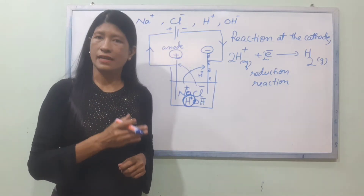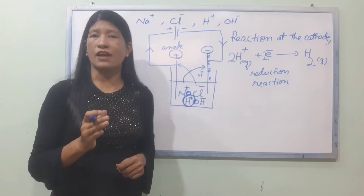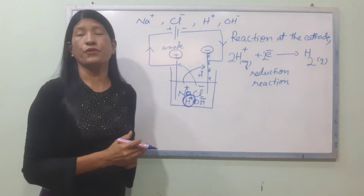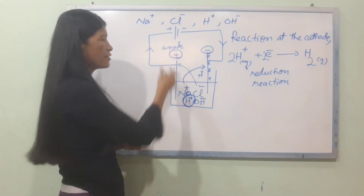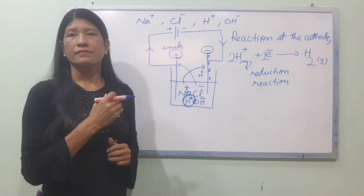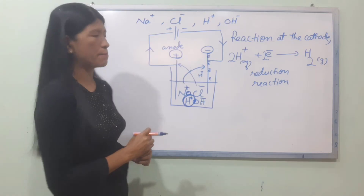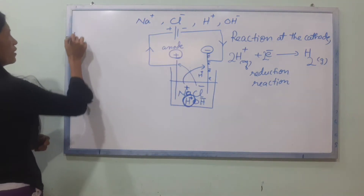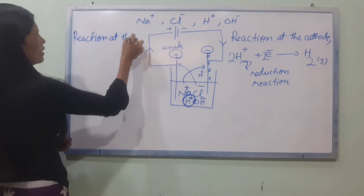The reaction involves OH- ions. The OH- ion loses an electron — the electron is given up by the atom. This is the oxidation reaction occurring at the anode.